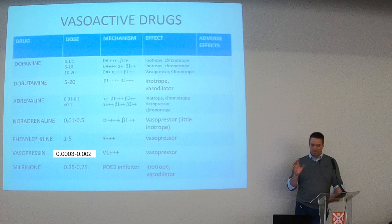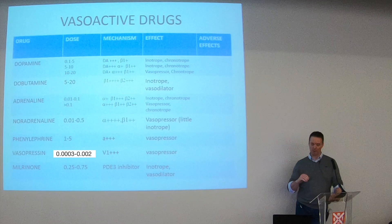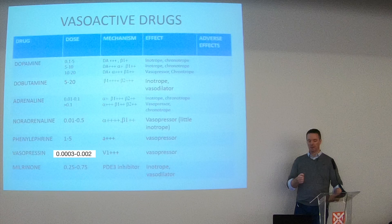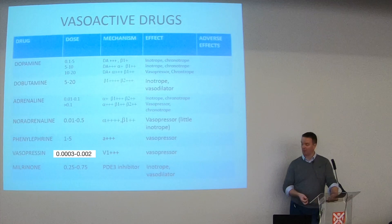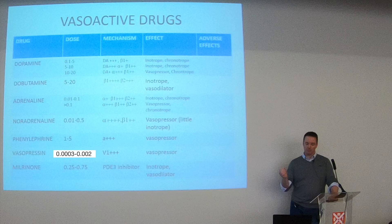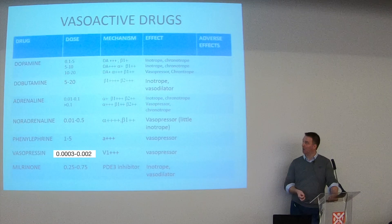Looking at dopamine, there's this mythical idea of its multi-level dosing - low dose was supposed to be protective to the kidneys, which is not true. Middle dose is mostly inotropic and higher doses are mostly vasopressive. The difficulty is that clearance and volume of distribution between small infants and adults is so variable that it's really hard to know exactly what target concentration you're achieving. Generally, the higher the dose it'll act more like a vasopressor, but it often gives a very severe tachycardia, which isn't always beneficial.